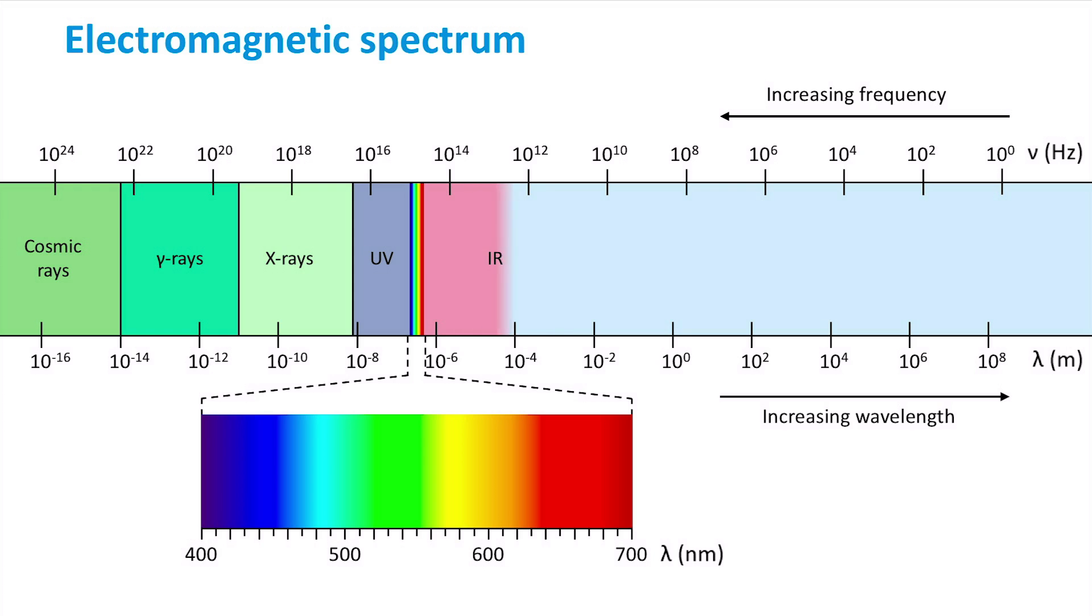If we look at electromagnetic radiation with wavelength larger than that of visible light, we enter the infrared part of the spectrum. Infrared light has a wavelength up to about a millimeter.